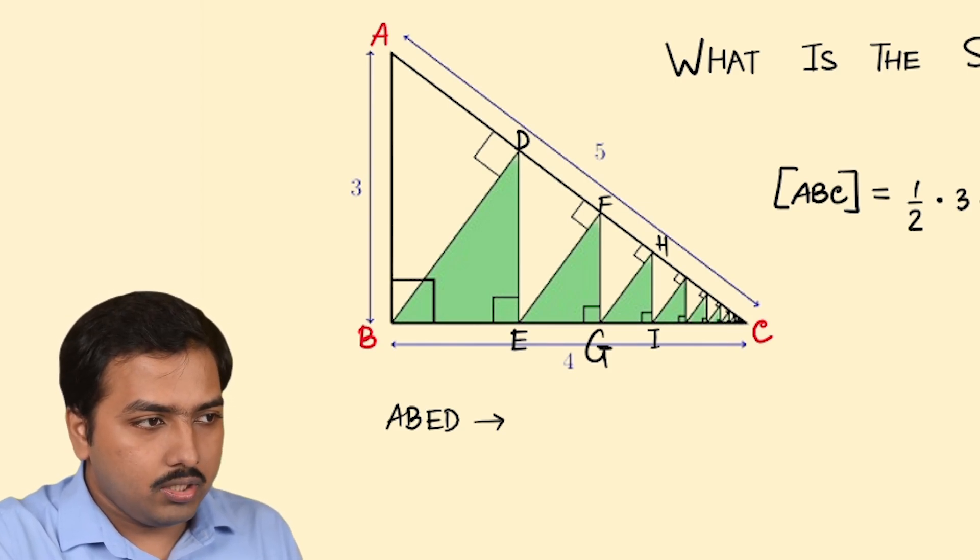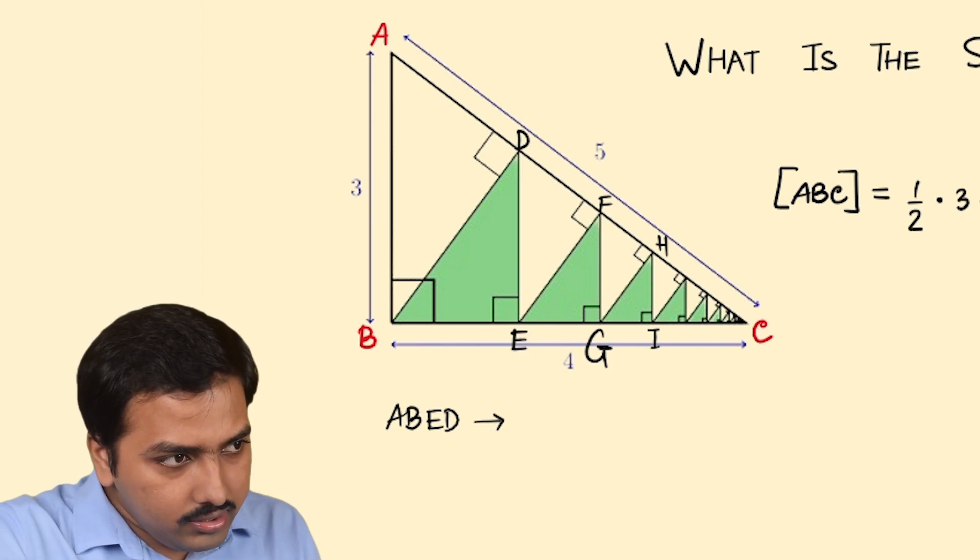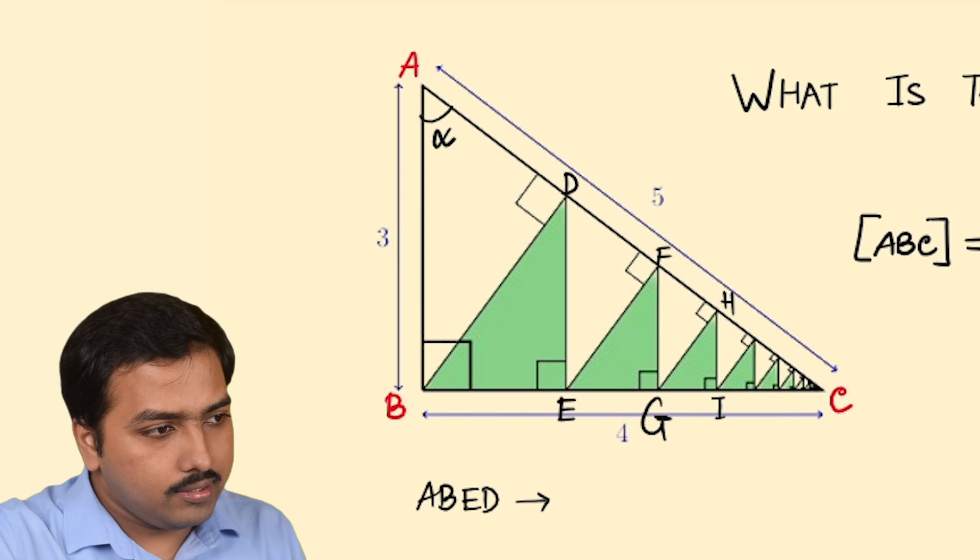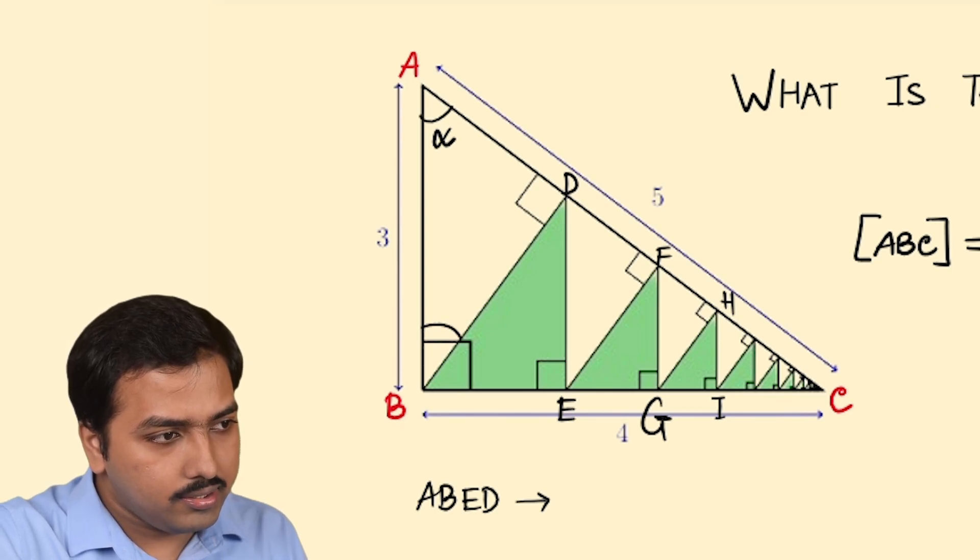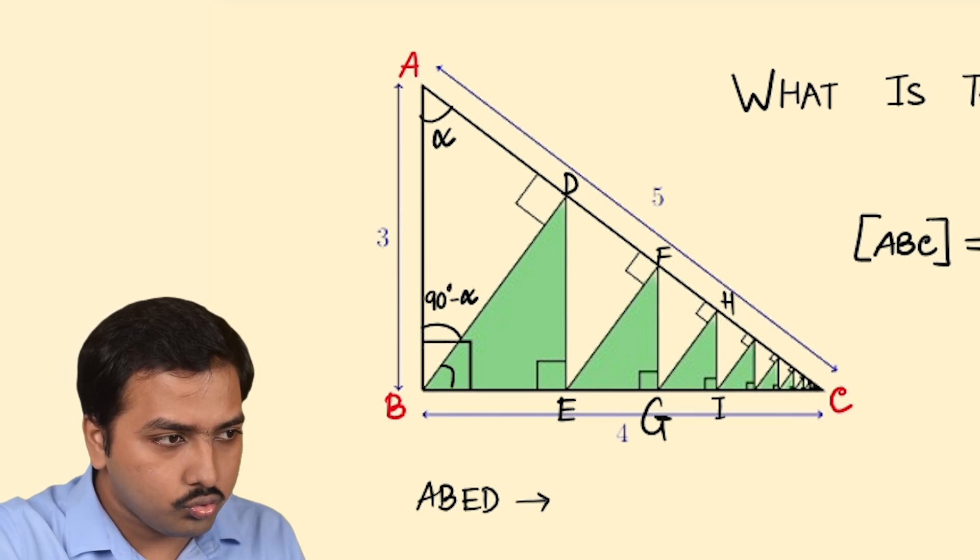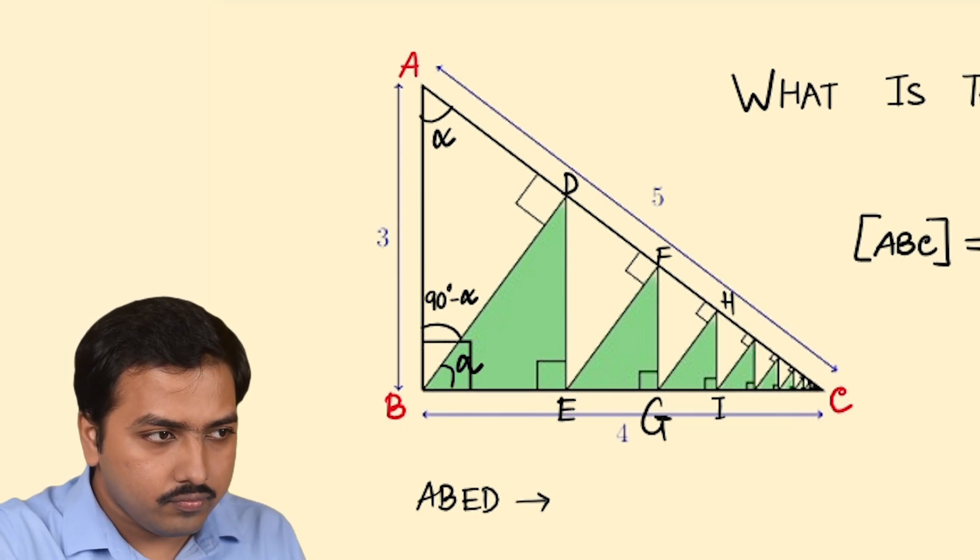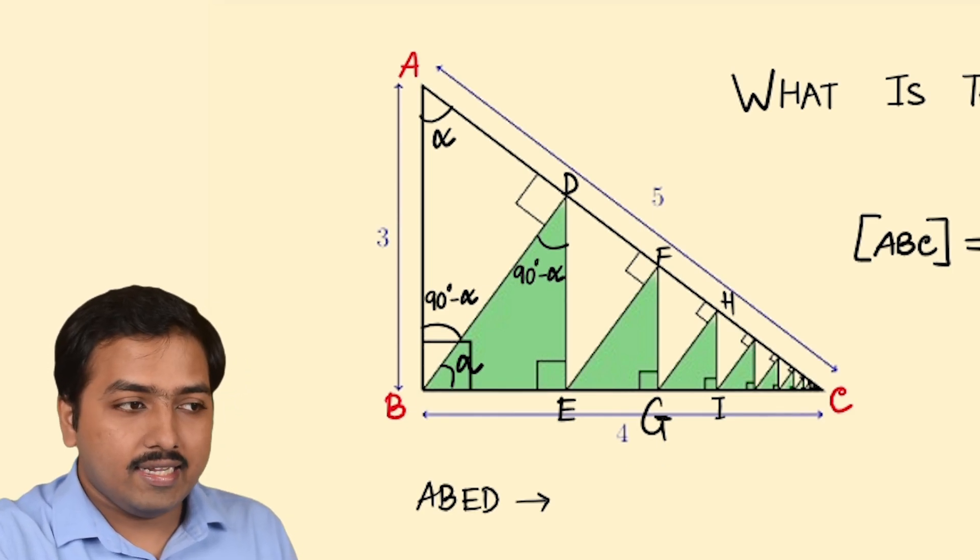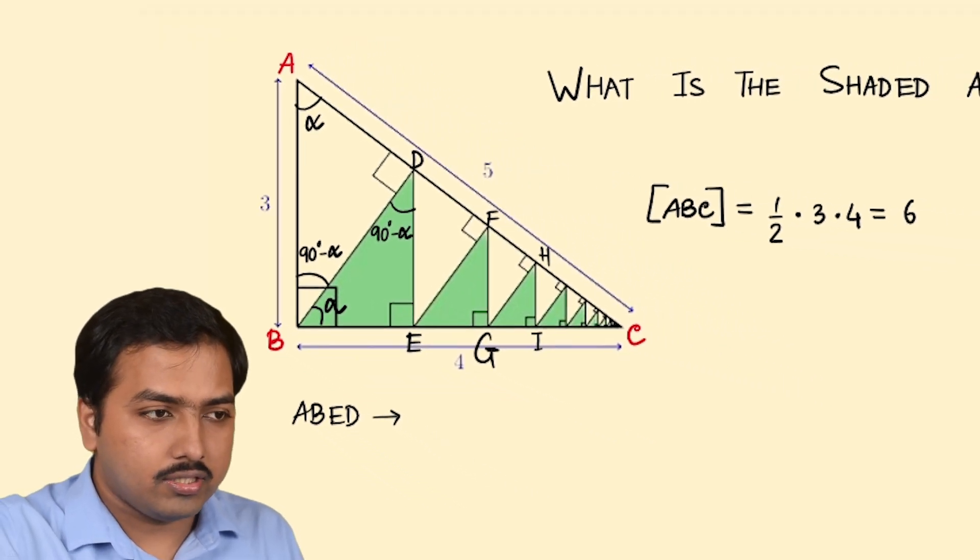Okay, so let's just assume this angle to be alpha. Then this angle to be 90 minus alpha. What about this? Then this has to be alpha as well. This has to be 90 minus alpha.